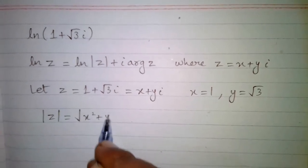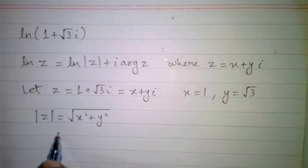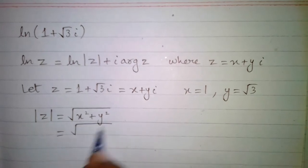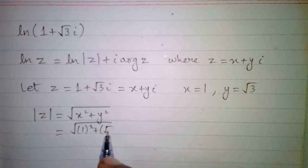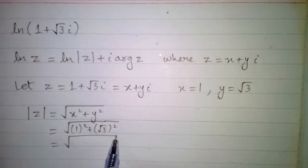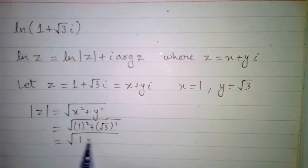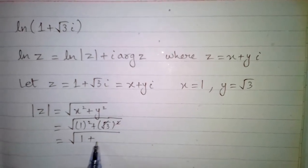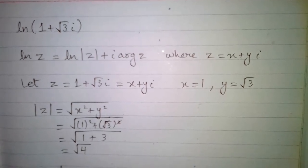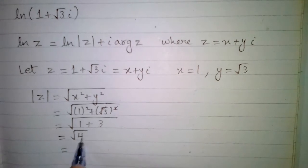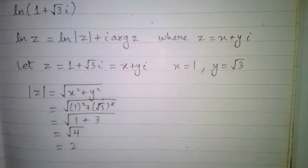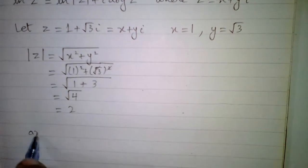Now we will find the modulus of z. The modulus of z is equal to the square root of x squared plus y squared. Putting in the values: square root of 1 squared plus the square of root 3 gives us square root of 1 plus 3, which is square root of 4. So the modulus of z is 2.